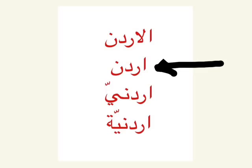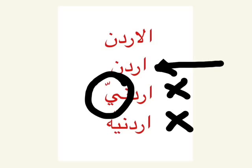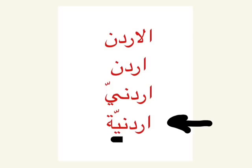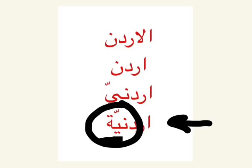For a male, we say urdeni — we add a ya and shadda to the root urden, and it becomes urdeni. For a female, we say urdeniya — we add ya and tamar buta with a shadda, and it becomes urdeniya.